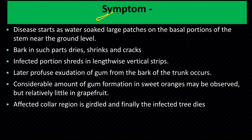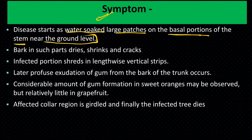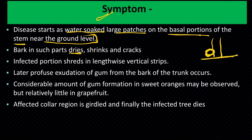This disease starts as water-soaked large patches on the basal portion of the stem near the ground level — at soil level. The bark in such areas dries, shrinks, and cracks. The infected portion spreads in lengthwise vertical strips.